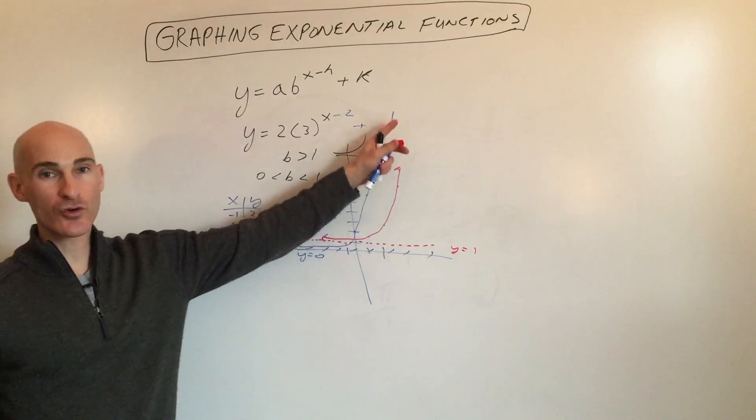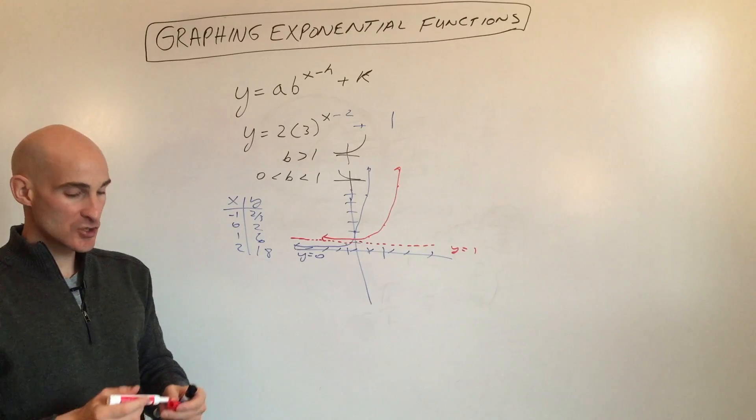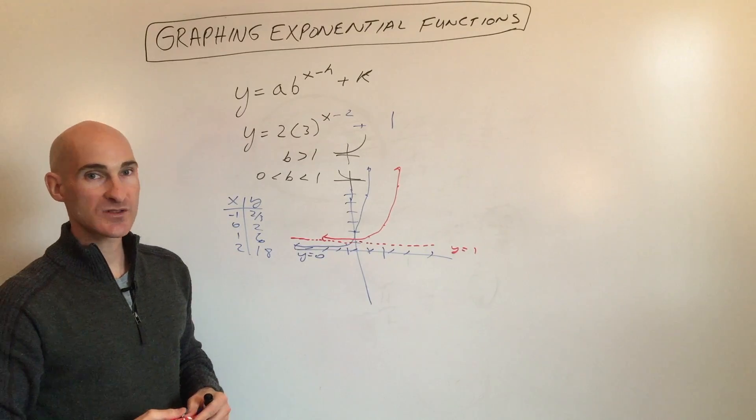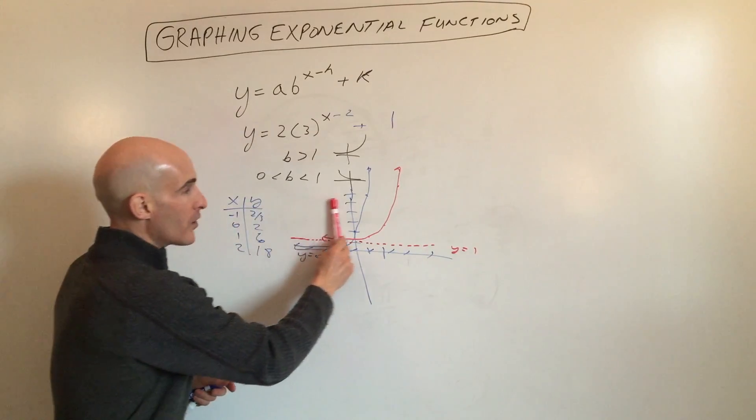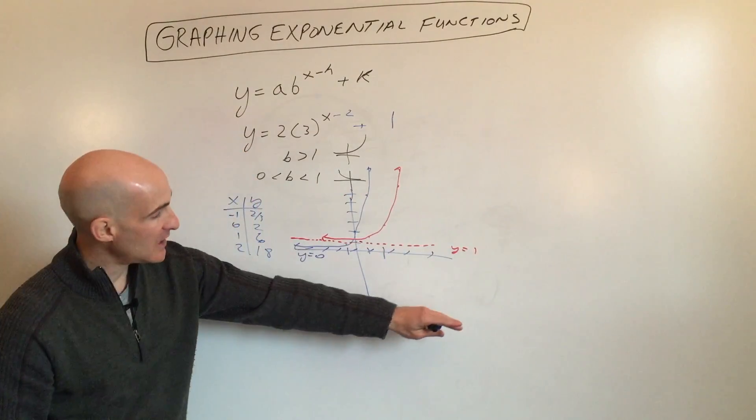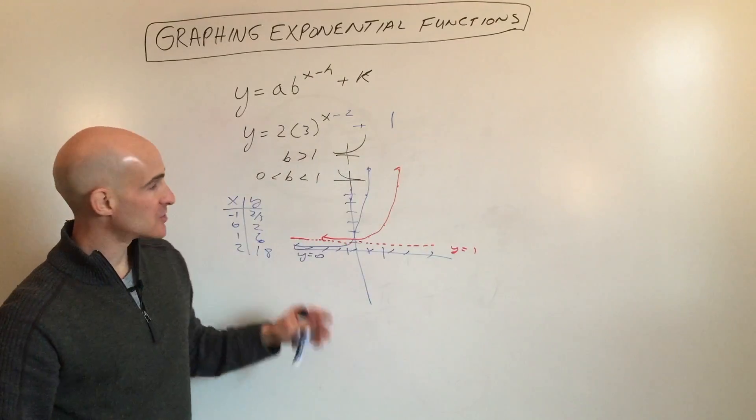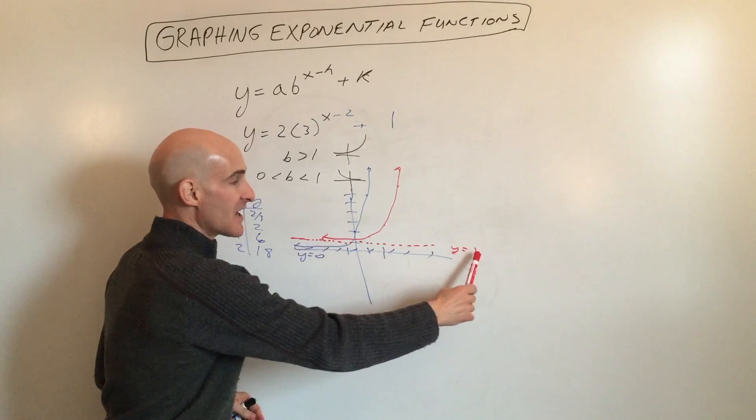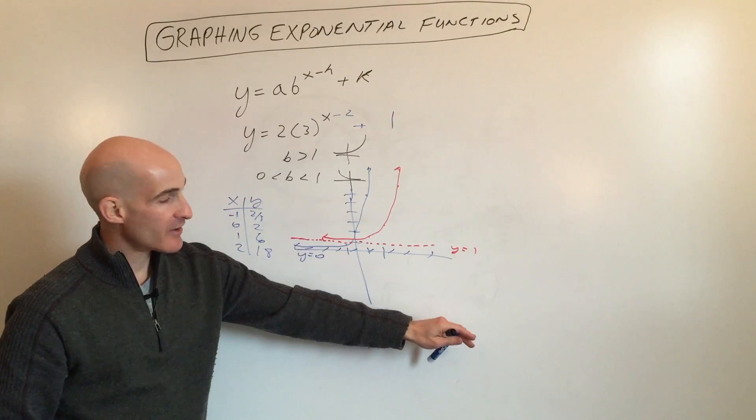That's exponential growth. Another question teachers will ask about this type of graph is: what is the domain and what is the range? Domain refers to the possible x values and range refers to the possible y values. For domain, I scan from left to right because that's the direction of the x-axis. For range, I scan from low to high.